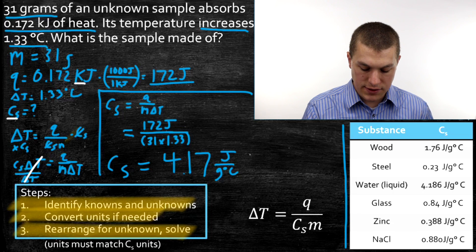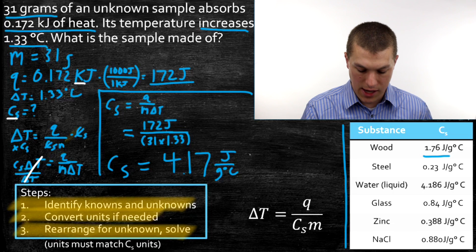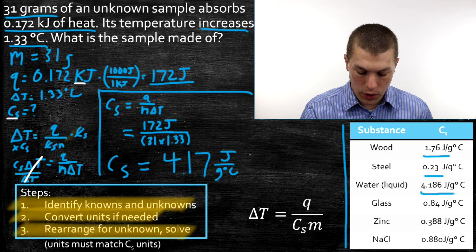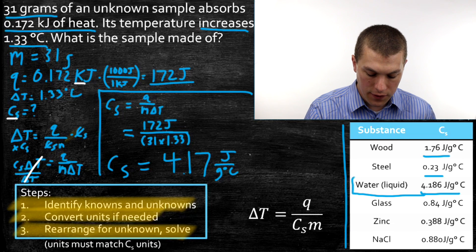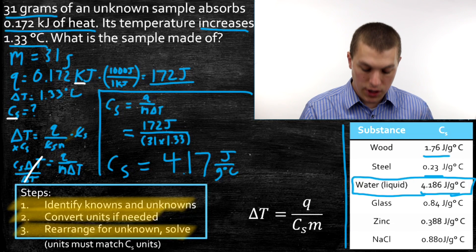We have to go and look and see what that is in our table. And we go through our table, and we see wood has a heat capacity of 1.76. That doesn't match. 0.23 doesn't match. But 4.186, water, liquid water, that matches. So that's what our substance is.